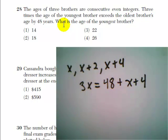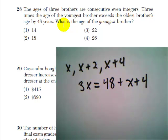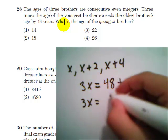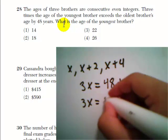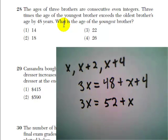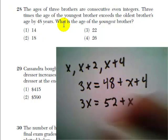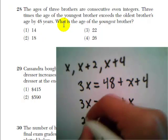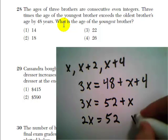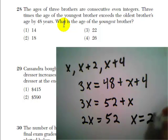So if I solve this equation for x, I know what his age is. So I have 3x equals, I'm going to combine the 48 and the 4 to get 52 plus x. Okay, let's combine the x's on the same side. So we get 2x equals 52. And we're going to divide by 2. So x equals 26. The youngest brother is 26 years old. That's answer choice number 4.